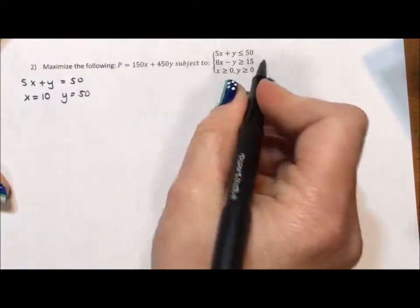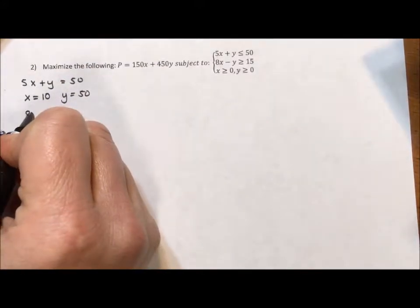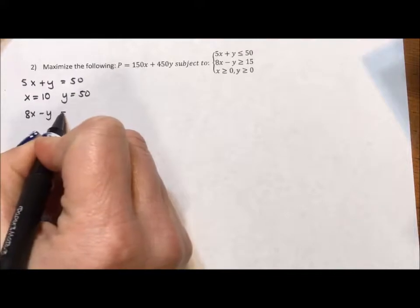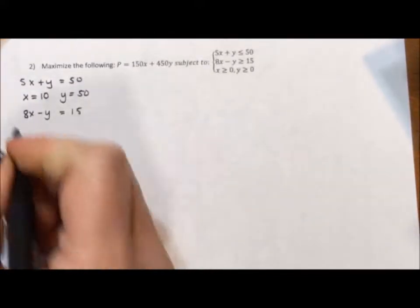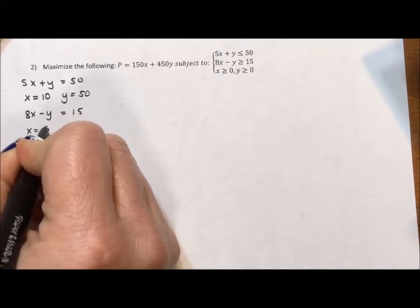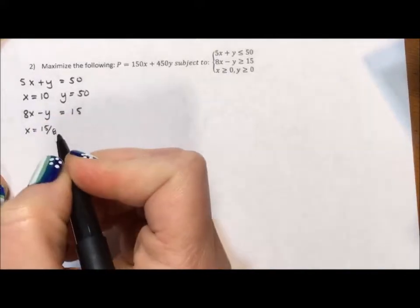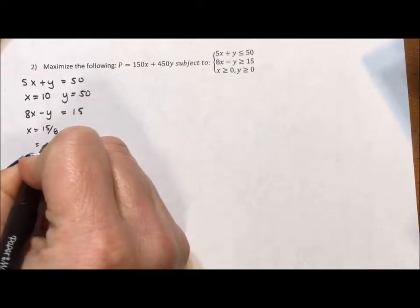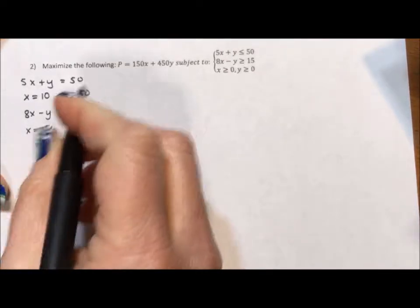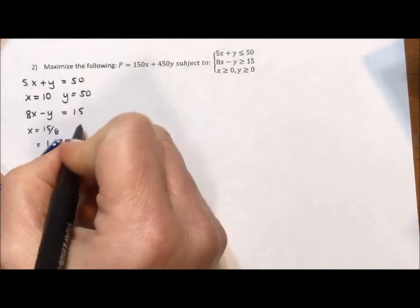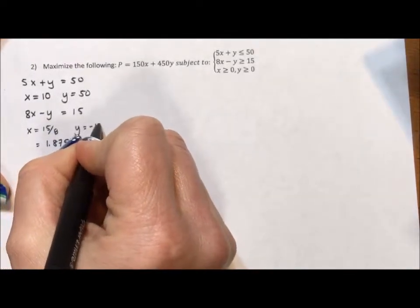I now want to do the same thing with the second line. I have 8x minus y equals 15. Where does this cross the x-axis? That is going to be at 15 eighths. I can do that or because it's a terminating decimal, 1.875. Where does this cross the y-axis? It's going to cross the y-axis at negative 15.